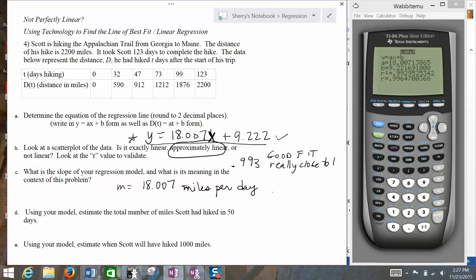For part D, it asks us to use our model, estimate the total number of miles that Scott had hiked in 50 days. Alright, well, in our equation, the number of days is X, so we're going to put that 50 in instead of X in my equation.